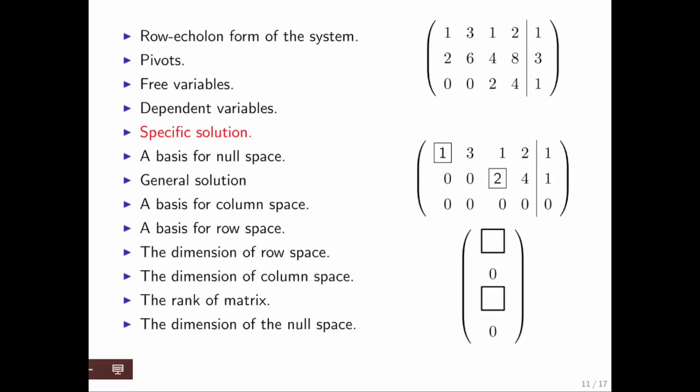Now we would like to identify a specific solution. The most straightforward way to find a specific solution is to set the free variables equal to zero and then solve for the remaining variables, the dependent variables. If you set the free variables to zero here, this goes away and that goes away, and you end up with the system chi0 plus chi2 equals 1, and 2 times chi2 equals 1. If you work that out, you find that chi2 is 1 half and chi0 is 1 half. That then becomes a specific solution.